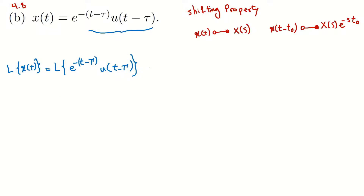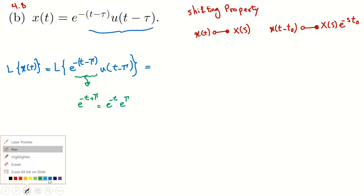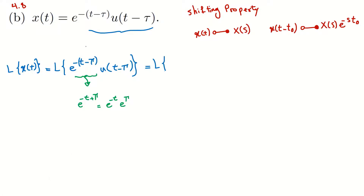I can further expand this signal. You can agree that I can write this as e to the power of minus t plus τ, which then equals e to the power of minus t times e to the power of τ. So I can find the Laplace transform of e to the power of τ times u of t minus τ.